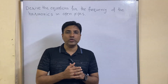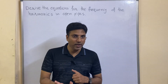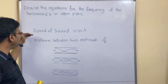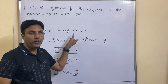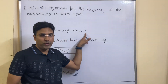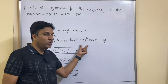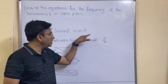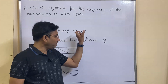If you want the notes of this topic, in the description you can find my WhatsApp link. You can join the link and there you can get the notes. The first basic is the speed of sound formula: V is equal to n lambda, where V is speed, n is frequency, and lambda is wavelength. The second basic: the distance between two antinodes is represented by lambda by 2. These two formulas are important to derive the equations.